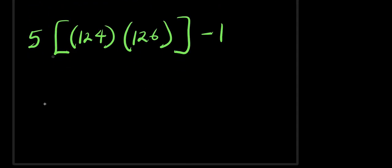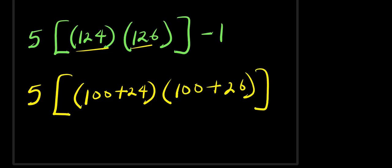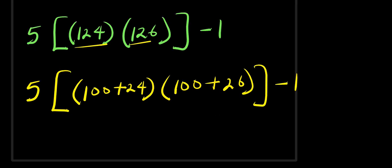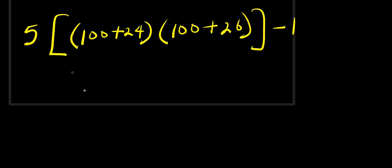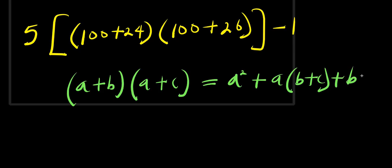So from here I have 5 times 124 times 126, minus 1. I can express 124 as 100 plus 24, and 126 as 100 plus 26. Now, if you have a plus b times a plus c, this equals a squared plus a times b plus c, plus b times c.